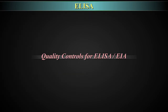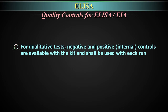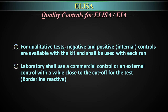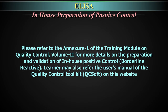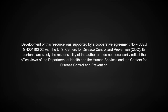Quality controls for ELISA. For qualitative tests, negative and positive internal controls are available with the kit and shall be used with each run. In addition, laboratories shall use a commercial control or an external control with a value close to the cut-off for the test — borderline reactive. In-house preparation of a positive control, i.e. borderline reactive and external to the kit, is also possible. Please refer to Annexure 1 of the Training Module on Quality Control, Volume 2, for more details on the preparation and validation of in-house positive control where it is borderline reactive. The learner may also refer to the User's Manual of the Quality Control Toolkit, QCSoft, on this website.